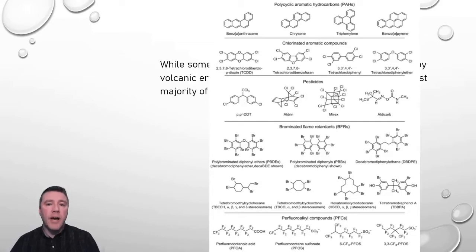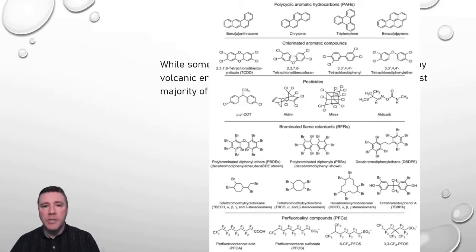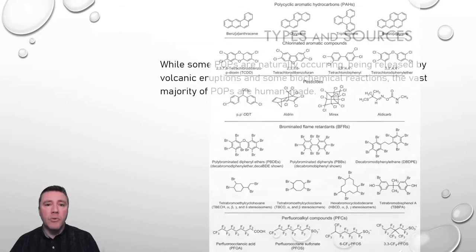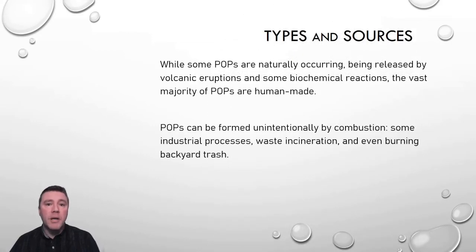Each of these is either a chain of carbon atoms linked together, or they form ring structures as well. Another common theme with persistent organic pollutants is the presence of halogens. In each of the categories we can see, for example, chlorine. There might also be bromine present, and in some of the ones down at the bottom, we see fluorine present. So persistent organic pollutants are carbon-based and oftentimes contain halogens as well.